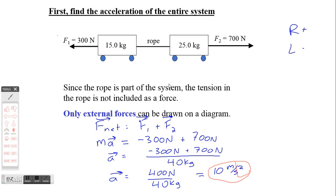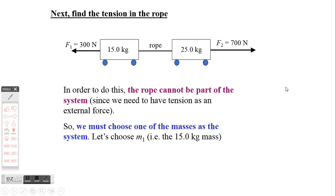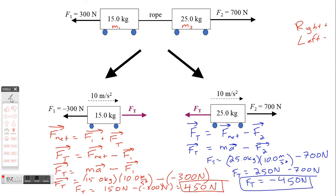Knowing the system acceleration allows us to now look at the net force on each of the carts. When we narrow the system down to an individual cart, we get to choose one cart as our system, and then the tension force is an external force acting upon it. We're going to start with m1, which is the 15 kilogram mass. The net force is going to be F1 plus the tension force, with right being positive and left being negative.